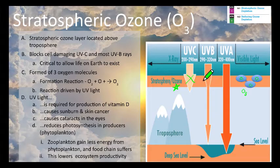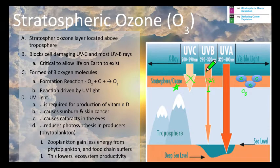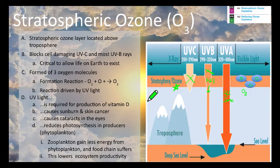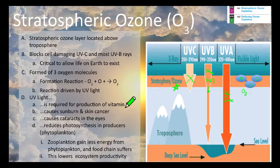UVB — about one to two percent — makes it through; the rest is blocked. UVA mostly gets through, as the ozone layer doesn't block it significantly. Overall, we want UV light blocked as much as possible. The stuff that isn't blocked is what we put sunscreen on for — protection from sunburn and skin cancer. Without an ozone layer, we would start getting UVC through, which would be a big problem for living things.